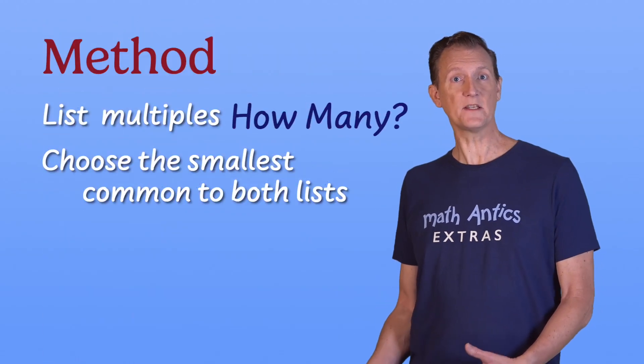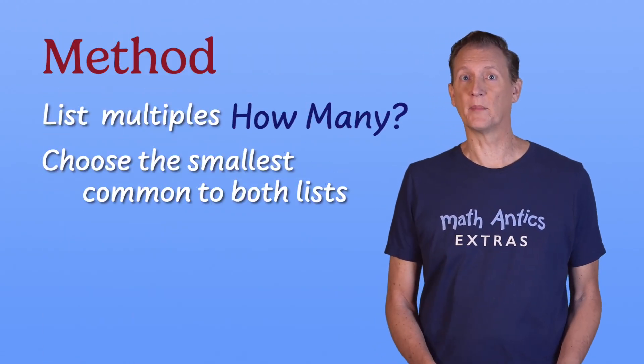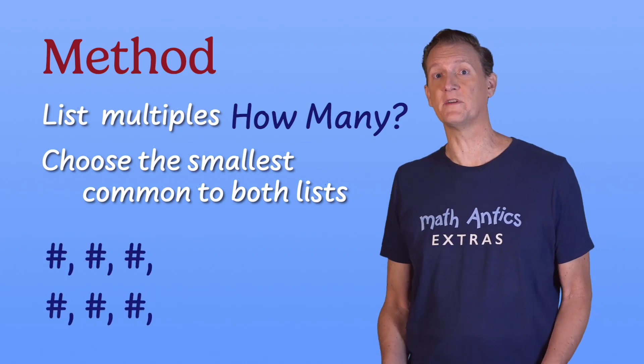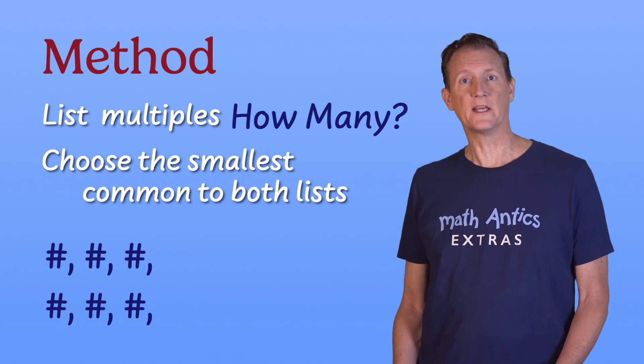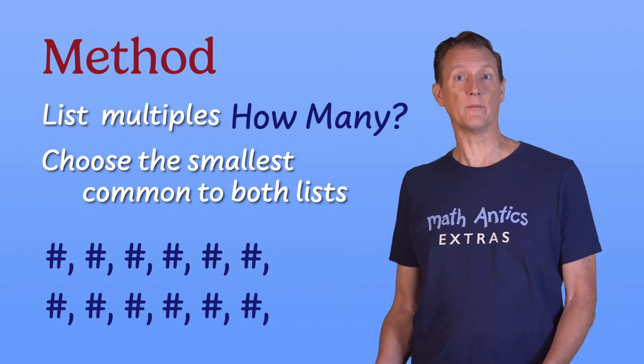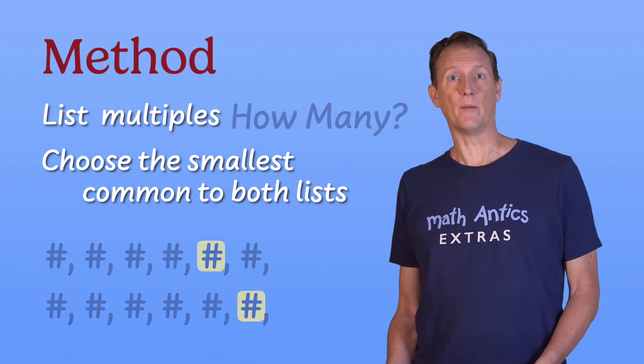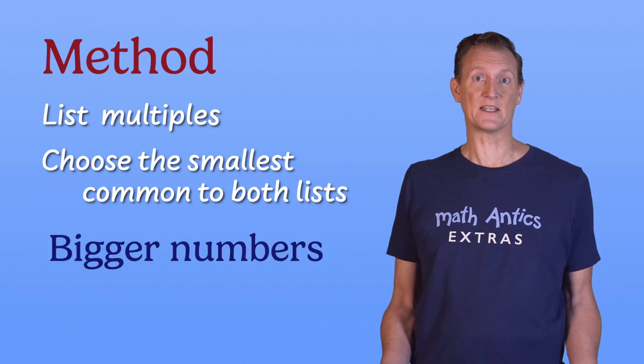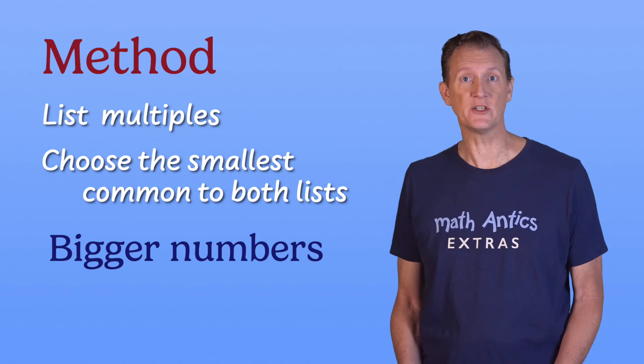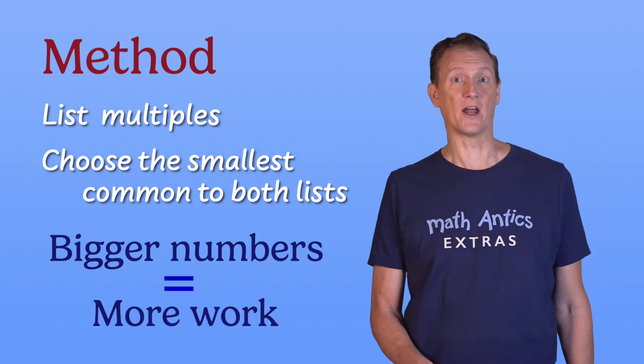So, if you're going to use this basic method, I'd recommend that you start by just calculating a few multiples of each number to see if you find a common multiple. Then if you don't, keep on calculating a few more each time until you do. The second drawback is that if the numbers are bigger and harder to find multiples, either by skip counting or just by using multiplication, then this method can be a lot of work.